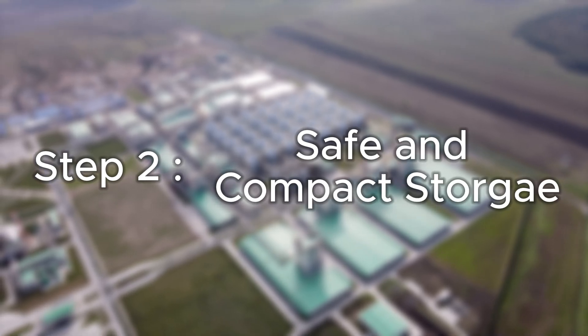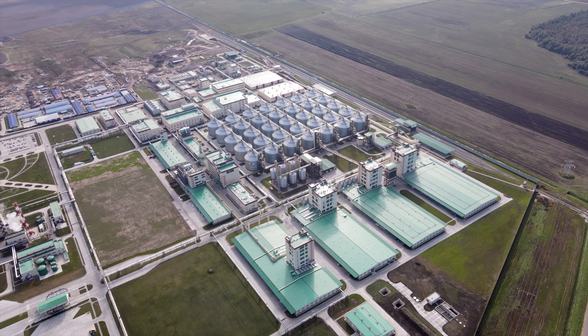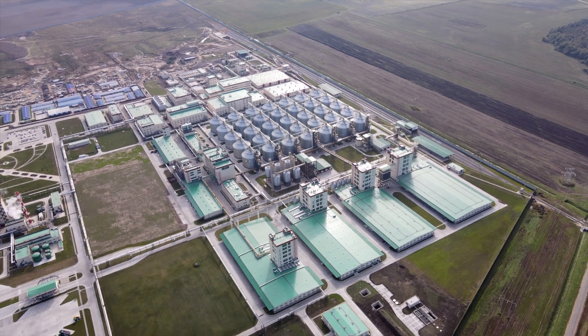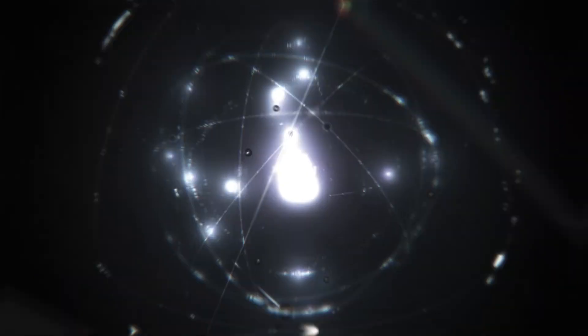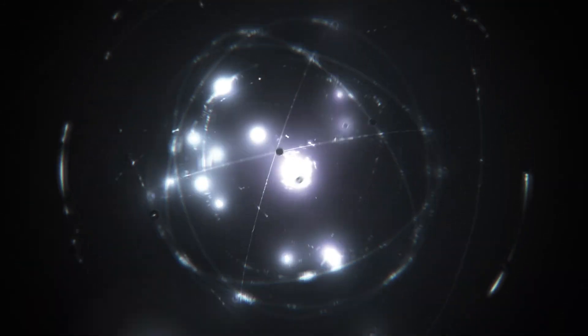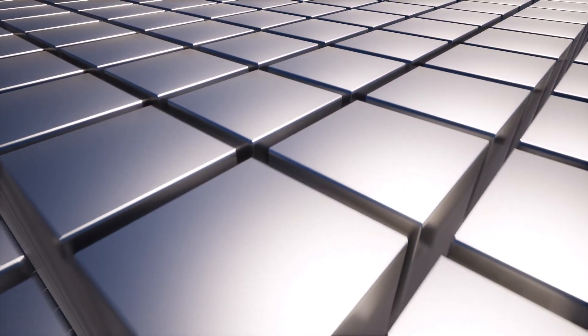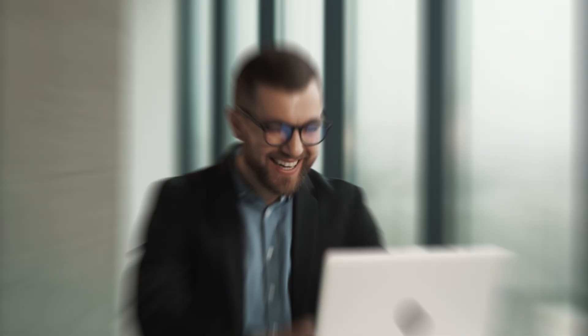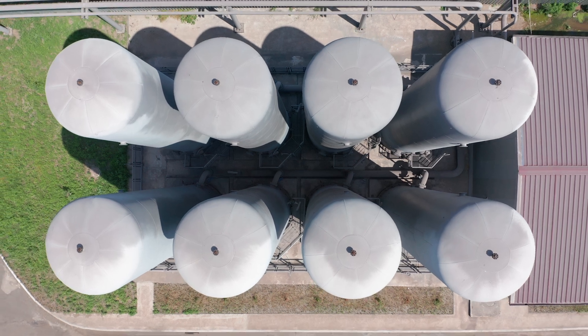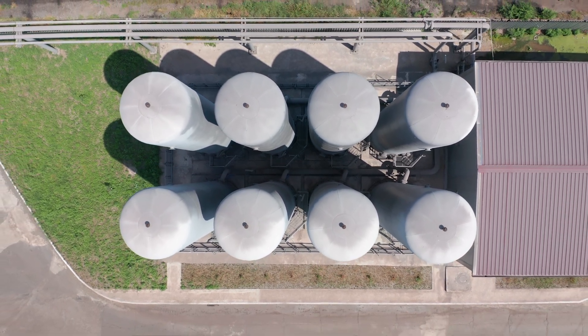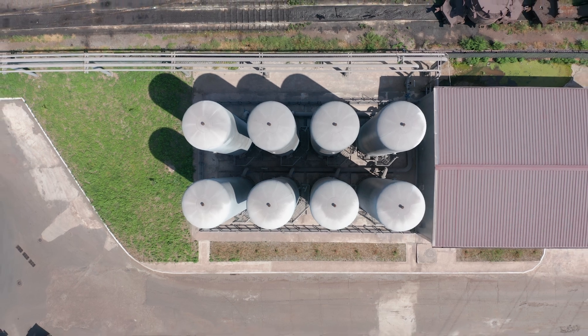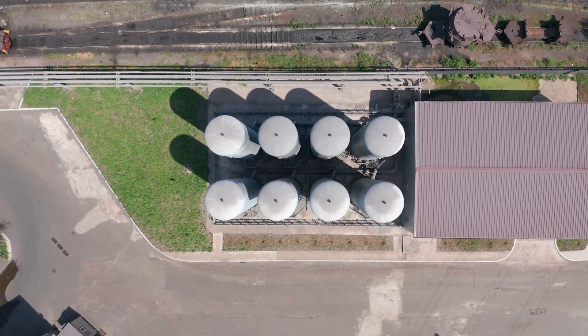Safe and compact storage. Once the hydrogen is inside, it's not just sitting there waiting to leak out or explode. It's trapped, stable, and safe. Imagine storing energy in a solid block instead of a tank of highly pressurized gas. That's why this technology is such a big deal. It's compact and way safer than the alternatives. Some materials can even store hydrogen at room temperature, which is a massive improvement over the -253°C needed for liquid hydrogen.